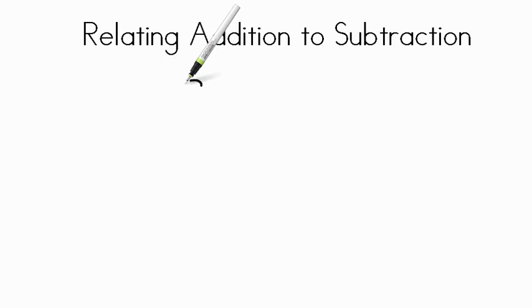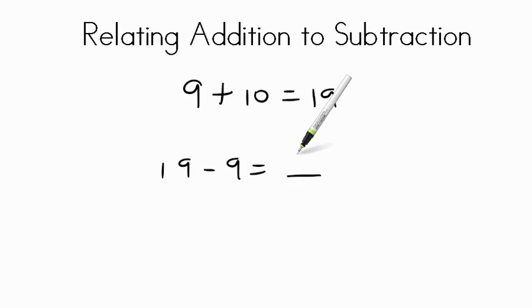Finally if nine plus ten equals nineteen, what would nineteen minus nine equal? If you did your subtraction correctly you'll figure it out that nineteen minus nine equals ten.